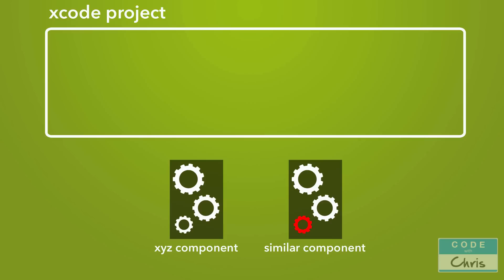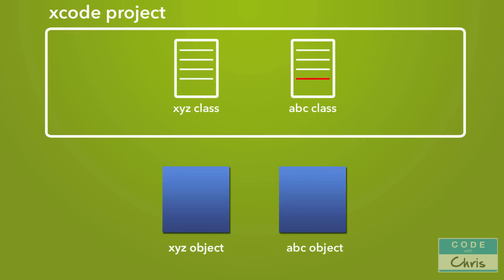You could write two separate classes, one to represent each of those components, where 90% of the code in those classes is the same. But that's a waste of effort, and furthermore it's generally a bad programming practice to have duplicate code everywhere because it makes code maintenance and debugging harder than it needs to be. And this is where subclassing comes in — it allows us to handle a scenario like this without having to duplicate 90% of that code.